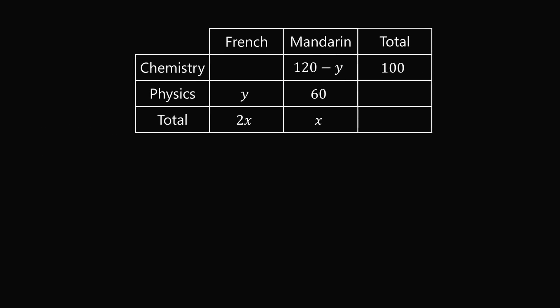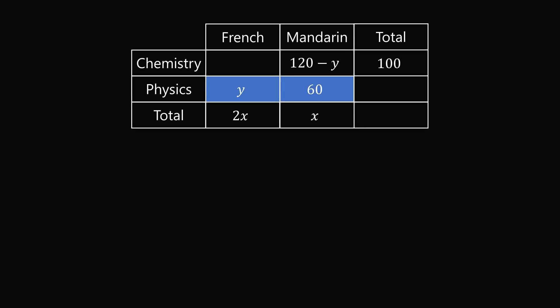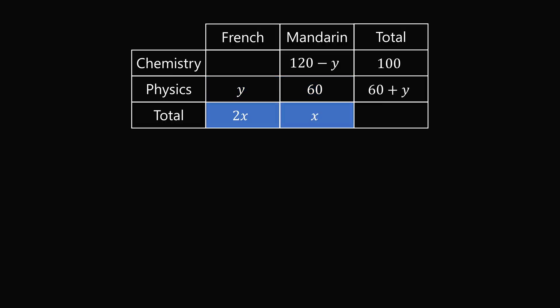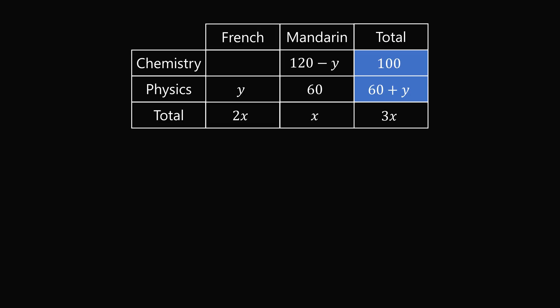Now let's take a look at this table. The total number of students studying physics will be 60 plus y. The total number of students studying French plus Mandarin will be 2x plus x. Since all students study French or Mandarin, the total number of students at Ranmore College will be 3x. But we can also look at the total studying chemistry or physics, and that also equals the total. So we have that 3x is equal to 160 plus y.